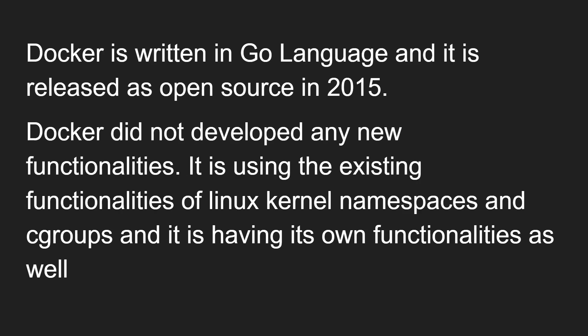Docker has been written in Go language and it was released as open source around 2013-2015. Docker did not develop any new functionalities. It is just using the existing functionality of Linux — those functionalities are nothing but kernel namespaces and cgroups. Cgroups are nothing but control groups. These are the main functionalities Docker relies on: kernel namespaces and control groups.